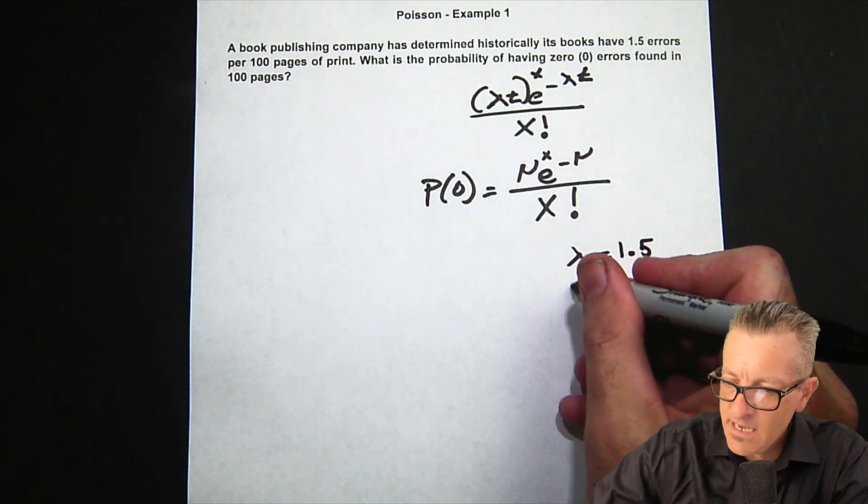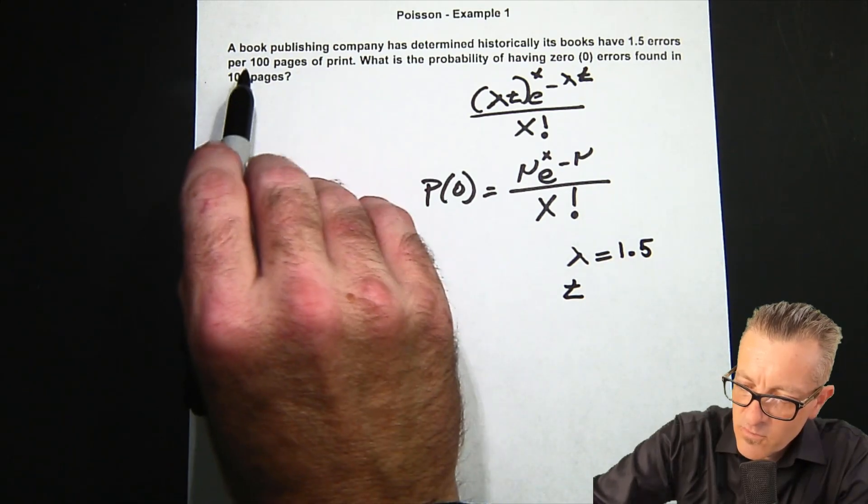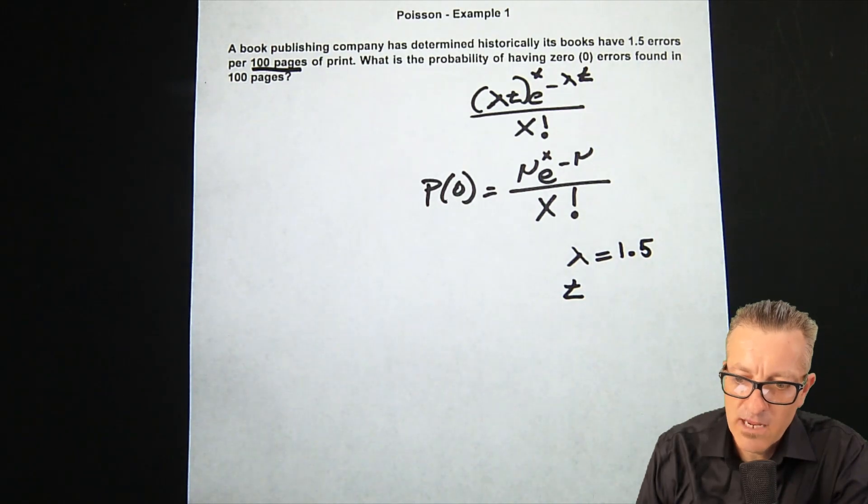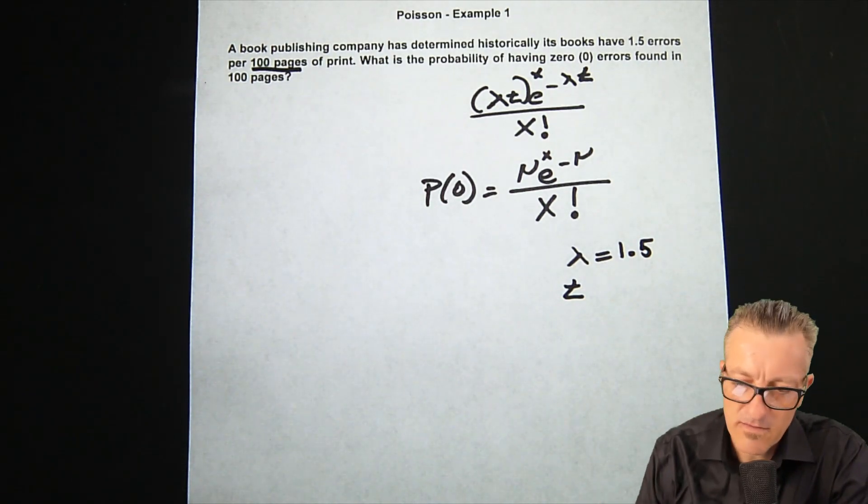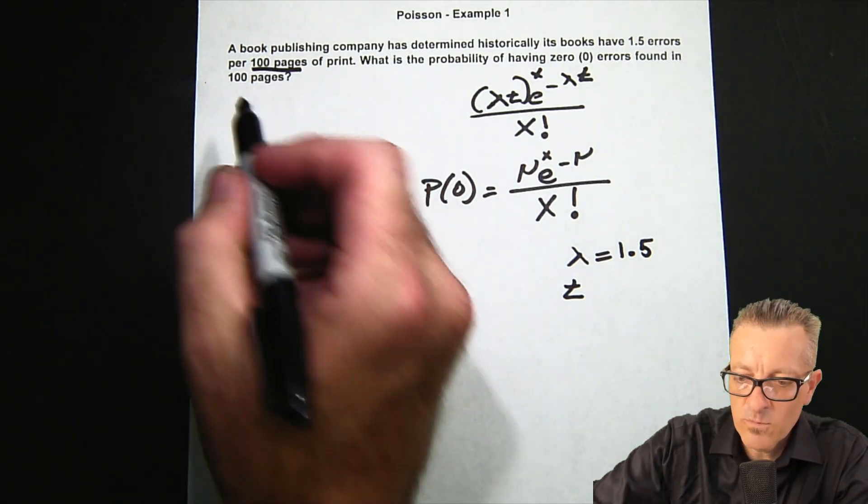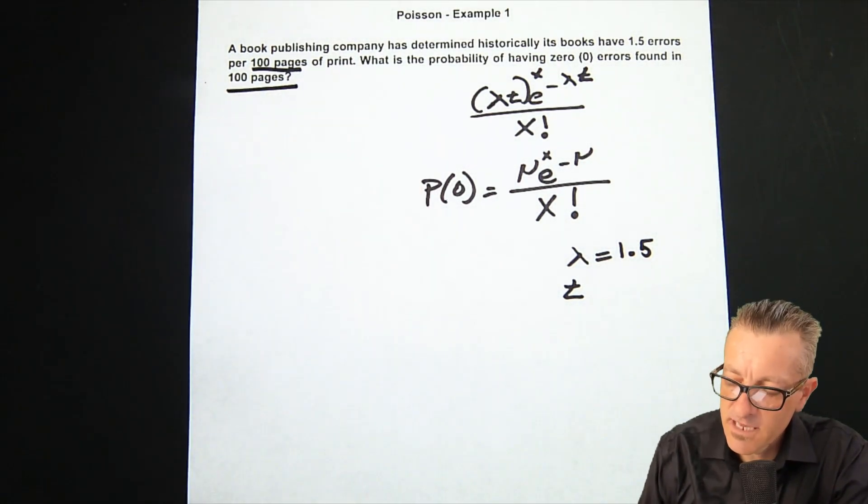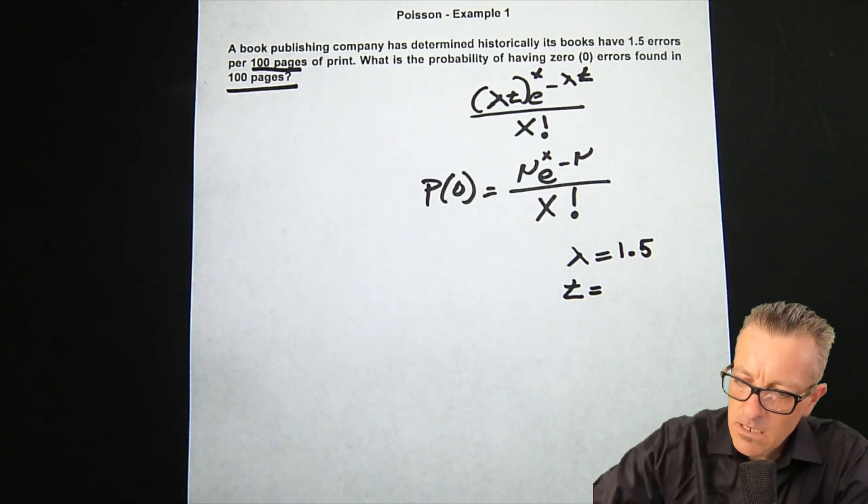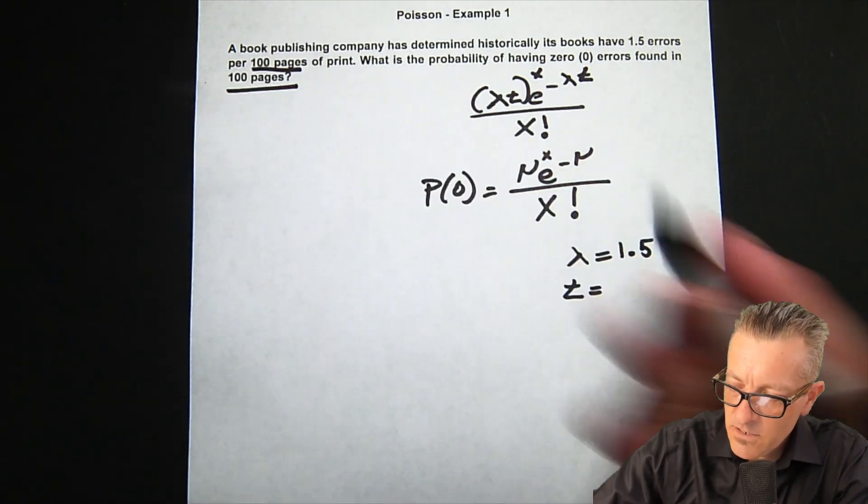We're going to write out 1.5—we don't have to do any conversion because we're in that same range of 100 pages. The interval that we're working with and the interval we're looking within is 100 pages, so our time is just one.